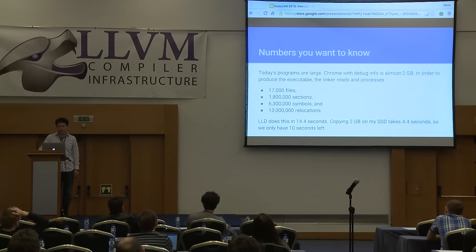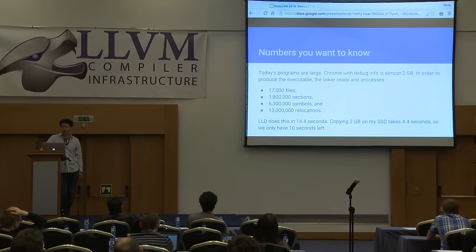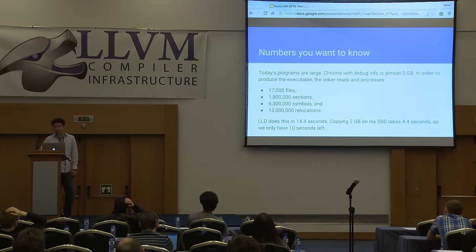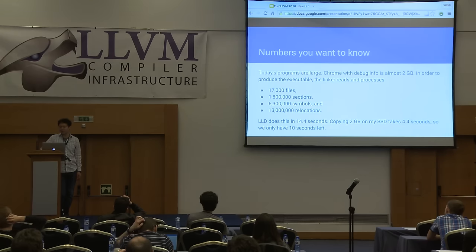Large programs are really large. To link Chrome with debug info, which is almost 2 gigabytes, the linker has to handle millions of objects. Developers are waiting while it's linking, so it must be breathtakingly fast. LLD can link the 2-gigabyte file in 40.4 seconds. Because copying the data takes 4.4 seconds, we have only about 10 seconds left to handle the 2-gigabyte file. If we spend 100 nanoseconds per relocation, then for 30 million relocations we spend 1.3 seconds in total. Every clock counts in the tight loop in the linker.